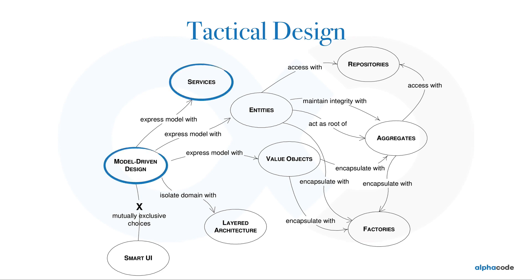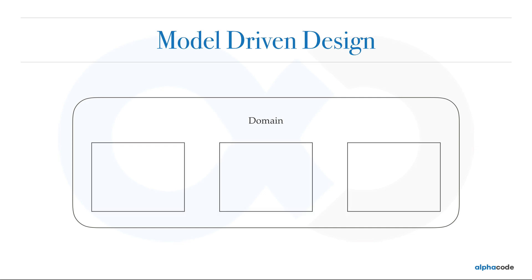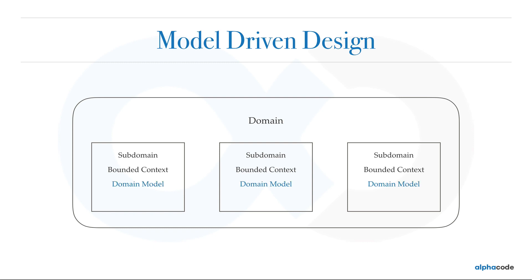Everything about domain-driven design is about the domain — whatever business you are trying to assist with the software is called your domain. Domains had sub-domains, and every sub-domain had its own bounded context. Sub-domains live in the problem space and we have bounded contexts for the same in the solution space. Every bounded context is represented using a domain model. A domain model is to a bounded context what classes are to objects — it's the abstraction of the domain, and not every aspect of the domain can be part of the model. Only the aspects chosen for implementation constitute the model.